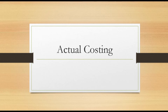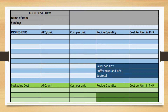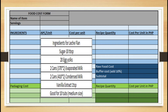Let's move on to the actual costing. First, we have the food cost form. In the food cost form, you will see the name of item, the servings, ingredients, APC per unit, cost per unit, recipe quantity, and all of that will be tackled one by one. Let's start with a sample recipe — ingredients para sa leche flan. The ingredients are sugar (10 tablespoon), 20 egg yolks, evaporated milk, condensed milk, and vanilla extract. It's good for 10 tubs, medium size.